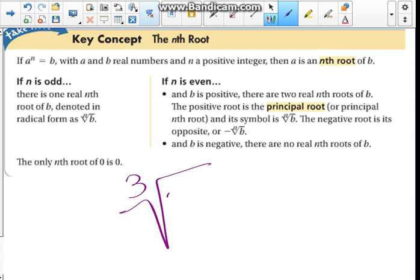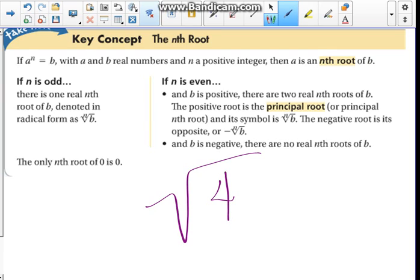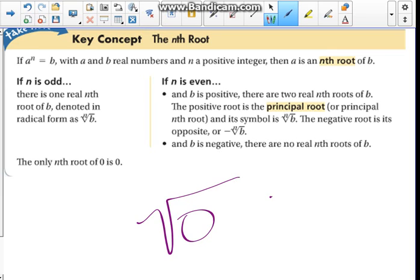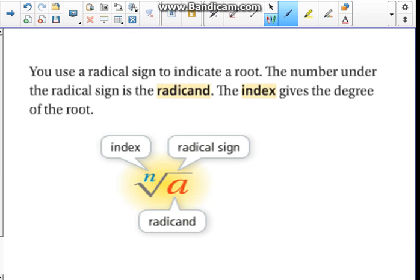If it's odd, then there's only one answer. It could be the cube root of negative 8 equals negative 2. There's just one answer if the index is odd. But if our index is even, it can have two answers. If this is positive under here, we're going to have two answers. But if this is negative, then there is no real root that exists. Any nth root of 0 is always equal to 0.